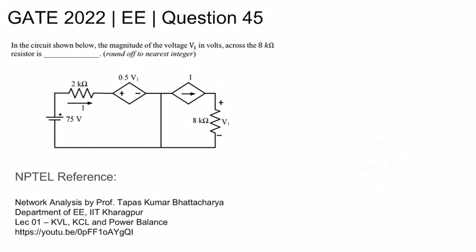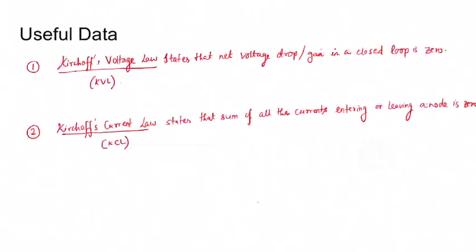Useful data you will need to solve this problem: Kirchhoff's Voltage Law states that the net voltage drop or gain in a closed loop is zero, whereas Kirchhoff's Current Law states that the sum of all the currents entering or leaving a node is zero.